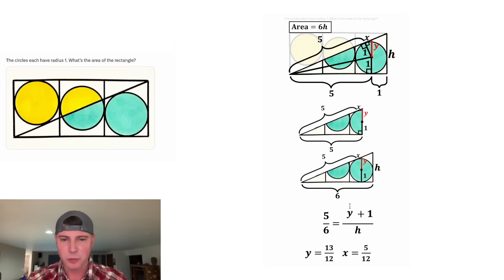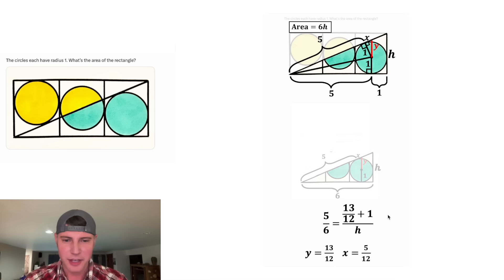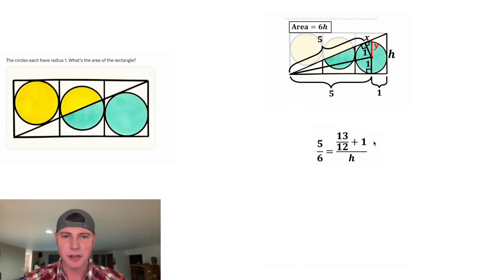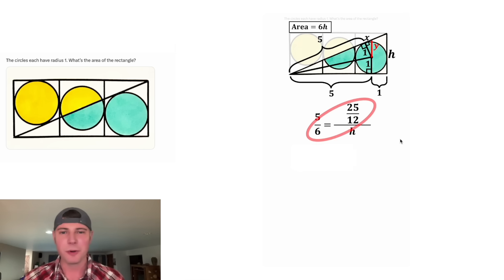In the place of this y, we're going to plug in 13 twelfths. So now we have everything we need to solve for this h. Let's clean up all of this and move this up here. First, let's add this stuff up here. Let's make this one a 12 twelfths. And we can do 13 twelfths plus 12 twelfths, gives us 25 twelfths. And then we can cross multiply. 6 times 25 twelfths will be equal to 5 times h.